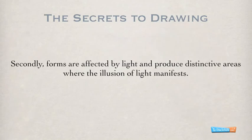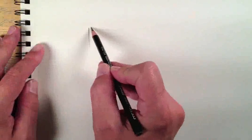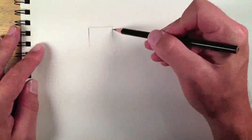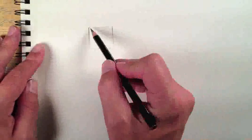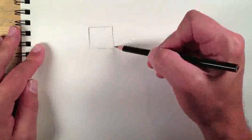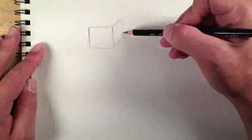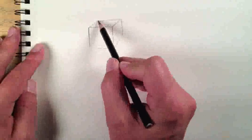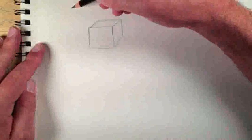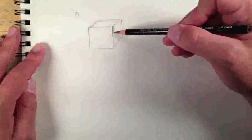Now let's take a look at a few shapes and how we can turn those shapes into the illusion of a form on a two-dimensional surface. We'll begin with one of the most basic geometric shapes: a square. When we begin with a square, we only have two dimensions. In order to add the illusion of three dimensions, we'll add a few more lines — three lines from each of three corners of the square — and then connect those lines to create the illusion of a cube.